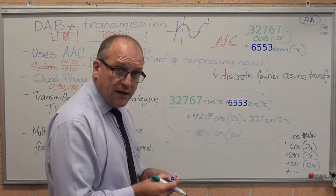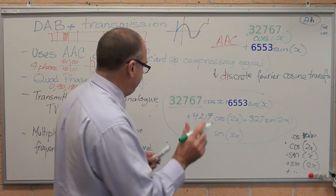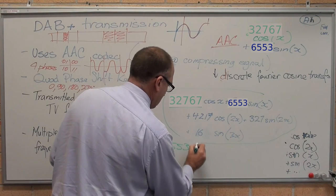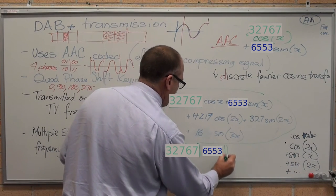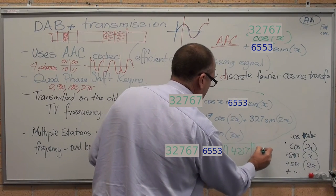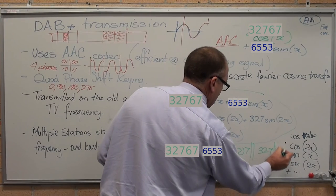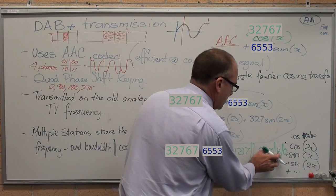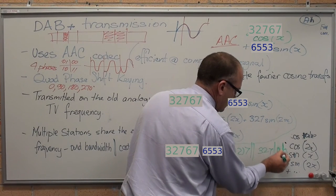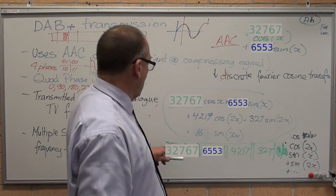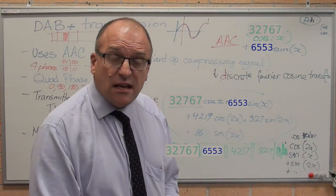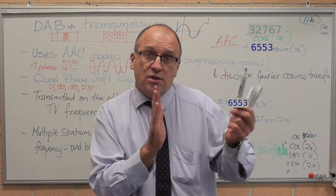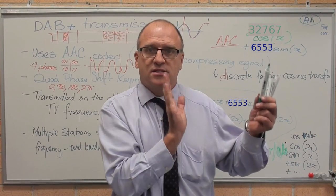Information that I'm sending, these numbers are all conveniently 16 bit. So I'm going to go 32,767, 6,553, 4,2,1,7, 3,2,7, 16, zero because there's no cos 2x, cos 3x, 16. So I've got 1,2,3,4,5,6 numbers to send to describe half a second of music. It gets converted into a tiny fraction of the sample. Gets sent over.